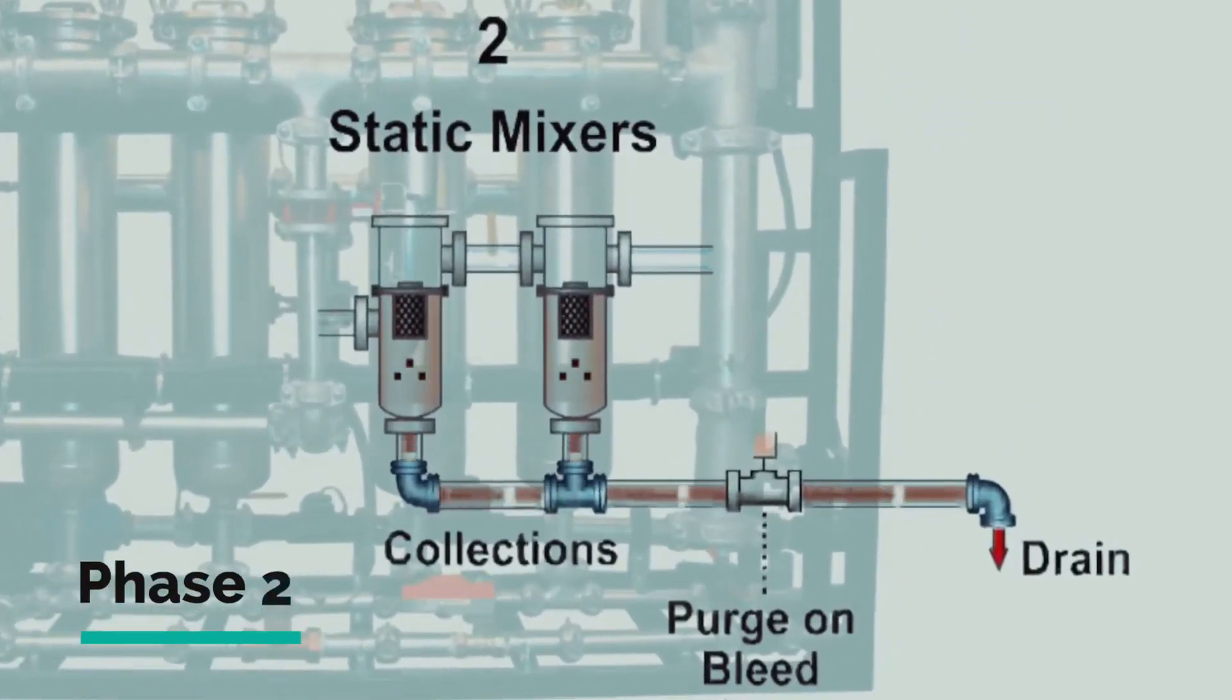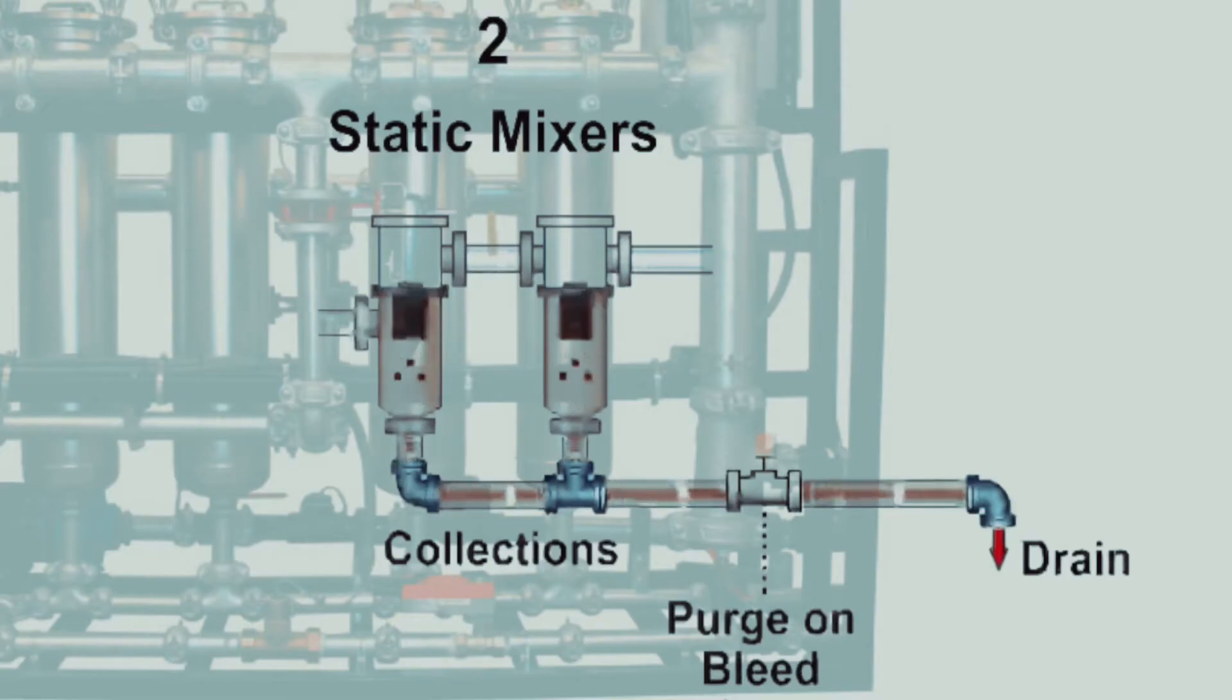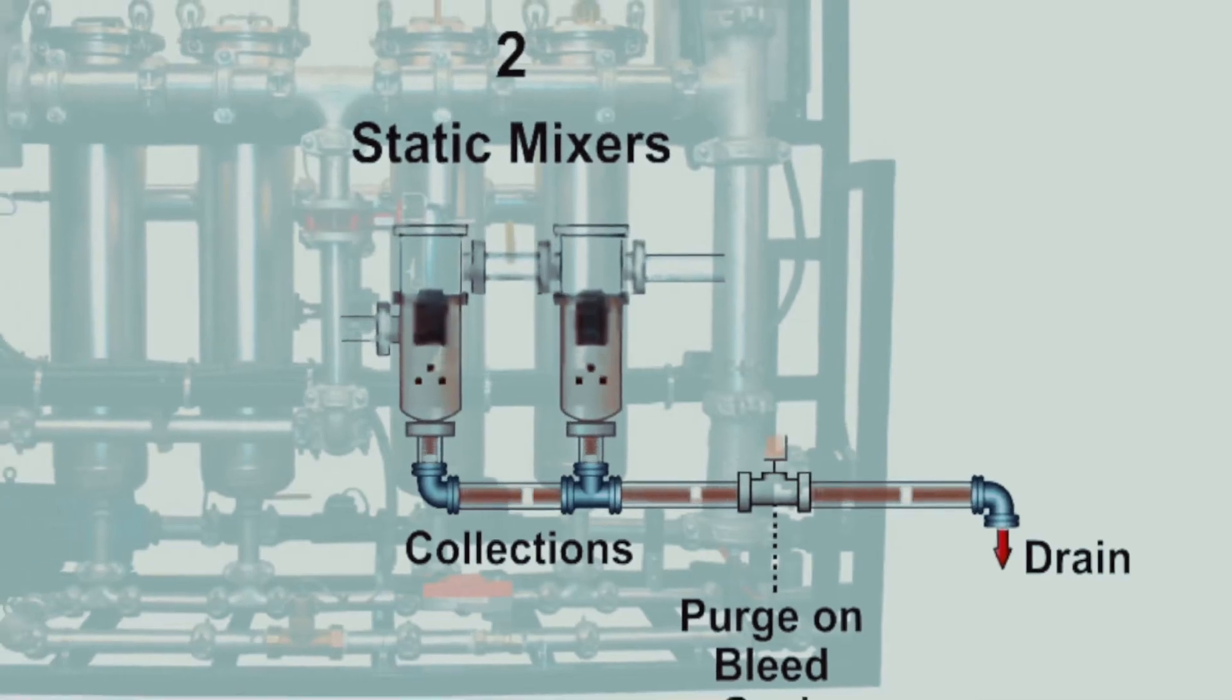Phase 2 is the static mixer debris removal process. The smaller suspended particles have now grown larger to a critical mass, causing them to precipitate into static mixers by gravity. These coagulated solids precipitate through a steel mesh media to the bottom of the static mixer vessels and are later purged to drain during regular system bleed cycles.